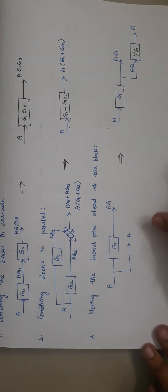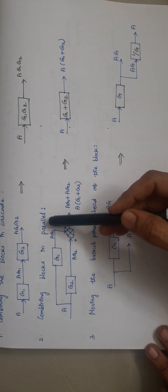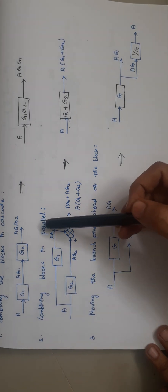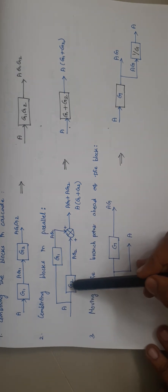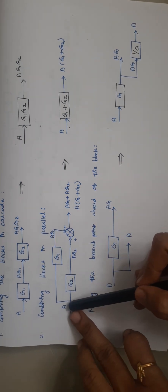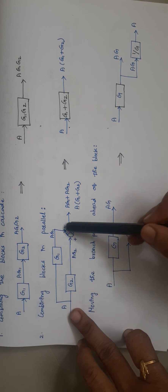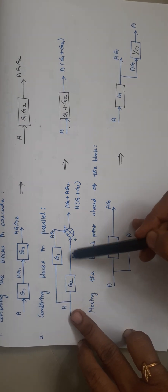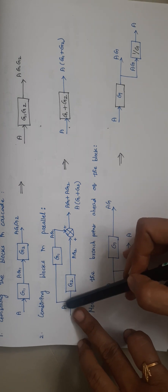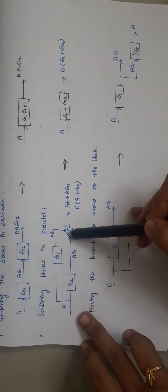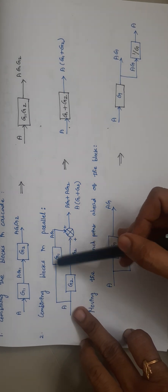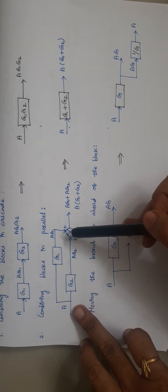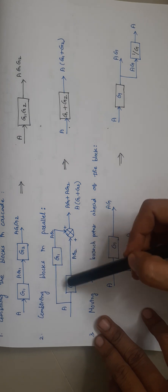The next rule is combining blocks in parallel. In a parallel connection, the starting point and ending point of each element should be the same. Here, G2 has input A and its output ends at the summer. Similarly, G1 also starts with A and ends at the same summer. So the starting point is A and the finishing point is the summer — these two blocks are in parallel.